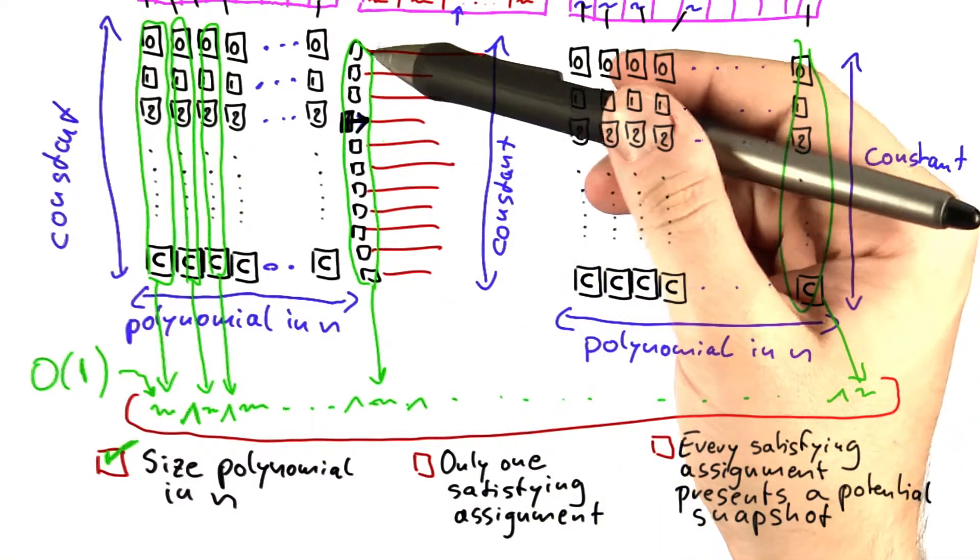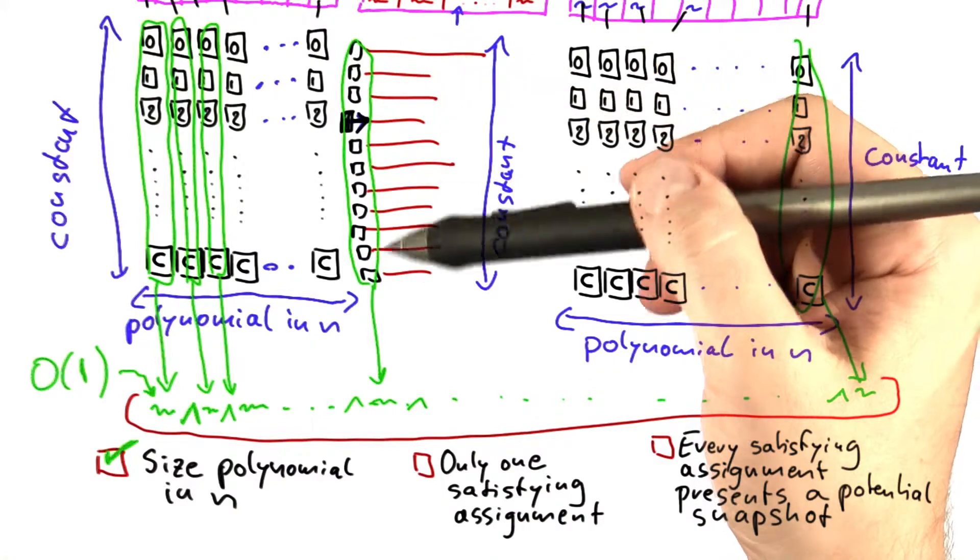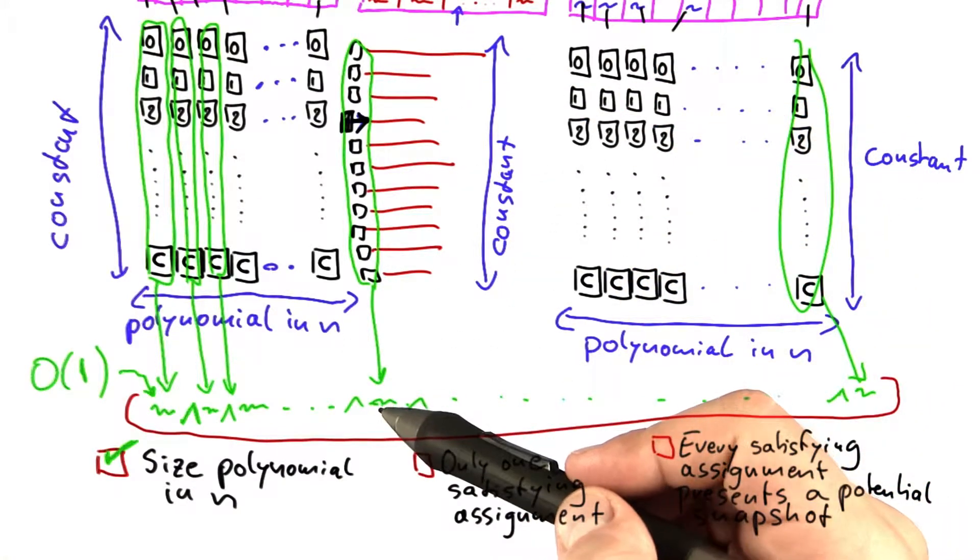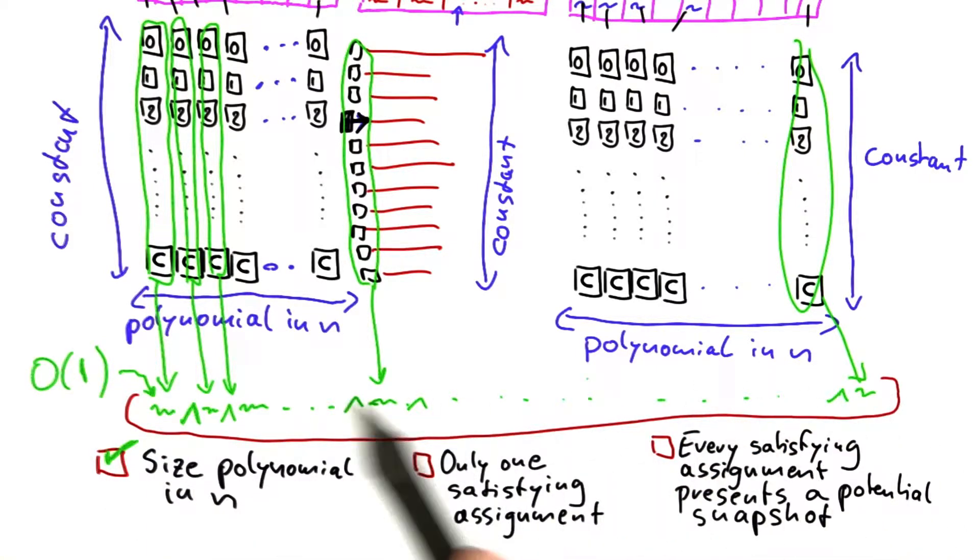And finally, the code also has a constant number of lines. And so the Boolean formula resulting from that will also have constant size. So overall, this huge formula here has a size that is polynomial in n.